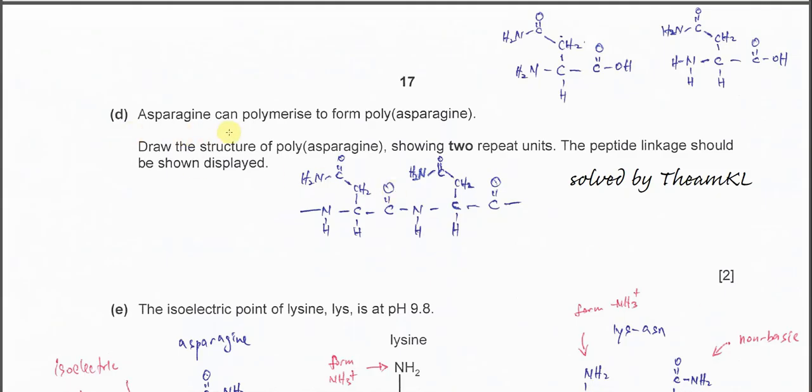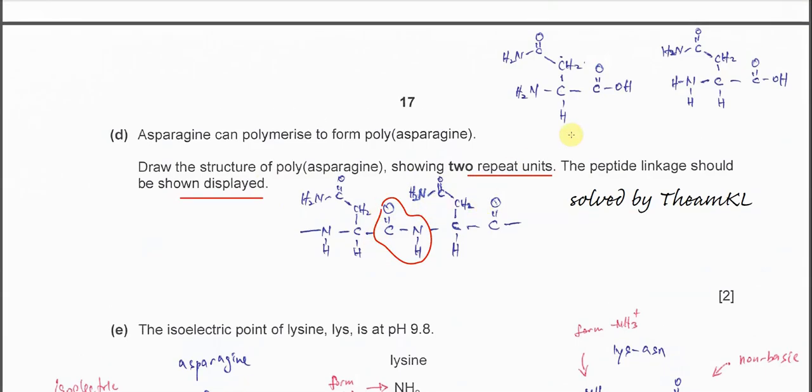Part D. ASN can polymerize to form poly-ASN. Draw the structure of the poly-ASN showing two repeat units. The peptide linkage should be displayed. Before you draw this dipeptide, make sure you arrange the molecule and put the amine and carboxylic acid on the left and right hand side so they can react with the other group. This is the side chain of the amino acid, and this is the difunctional group of the amino acid.